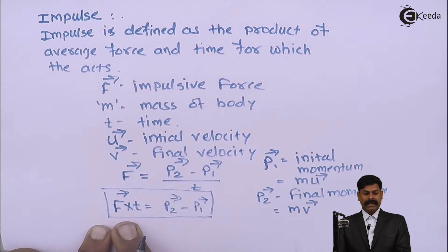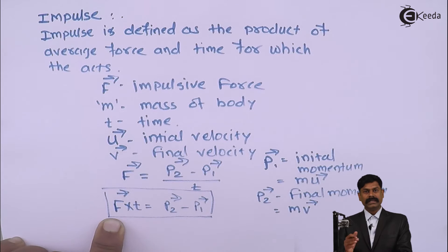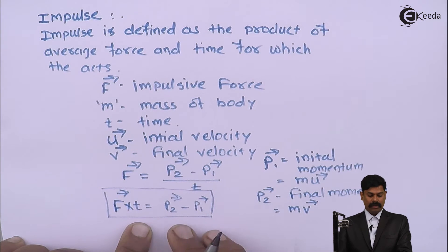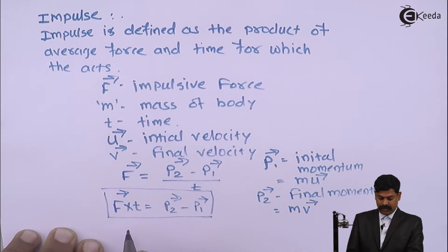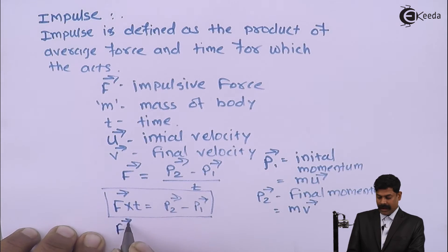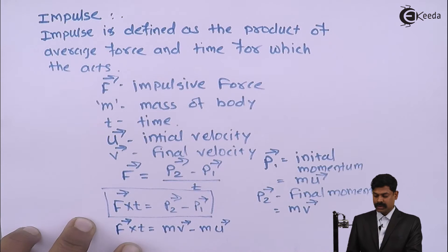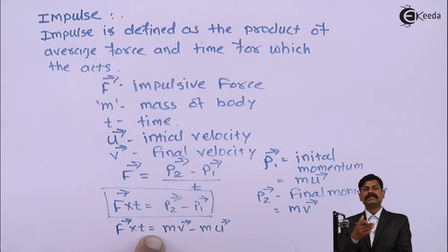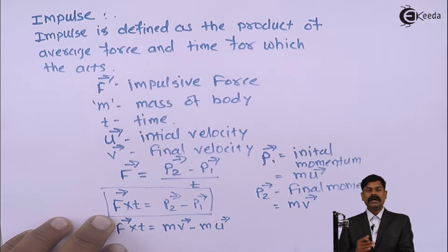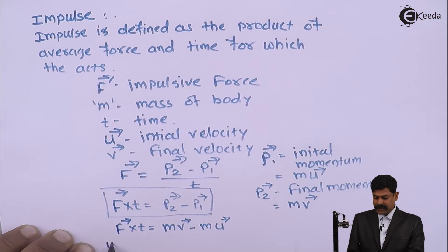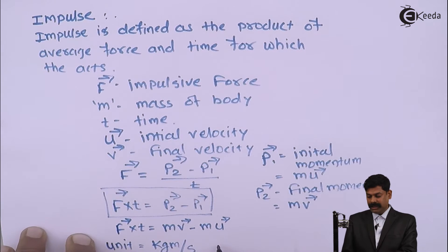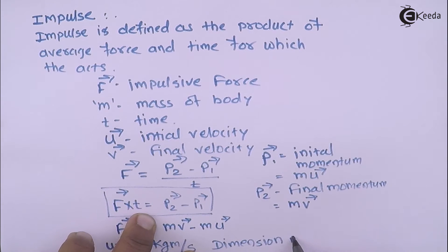This equation means: impulse received during the impact equals the change in momentum of the body. Therefore F·T = M·V̄ − M·Ū, which is the change in momentum when impulse acts on the body. Impulse is a vector quantity. Its unit is kg·m/s and the dimensions are M¹ L¹ T⁻¹.